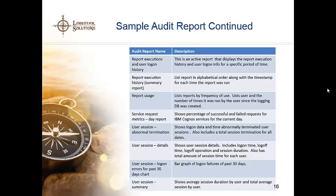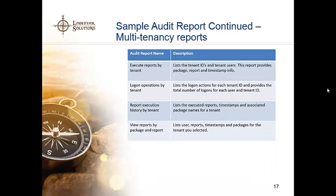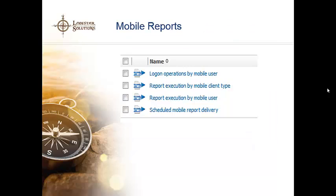There are also service requests metrics, user session details, and abnormal termination reports — these show if something happened and kicked a person out of the system, or how long that person has been in the system and how long they're using it. There are also some summary and logon charts. This part of the report package also includes some reports for multi-tenancy — for those of you with multi-tenant deployments, there are reports that give you the same type of information but based on tenant IDs or the tenant being used. Also included are audits for mobile users — you can see the different mobile users who have logged on and what reports they're executing. You can use this to minimize the number of reports available to the mobile world or make sure you have the right infrastructure for the number of people going through mobile, which is becoming more and more popular.